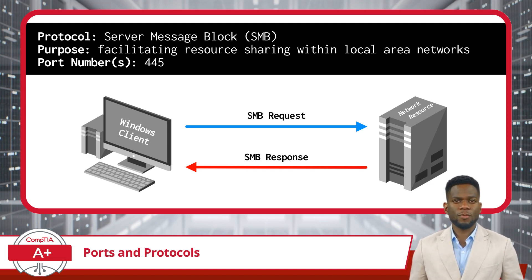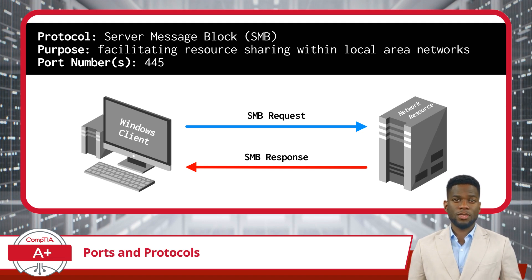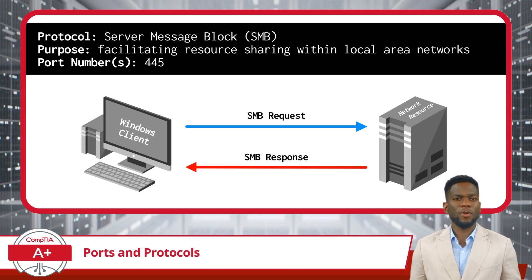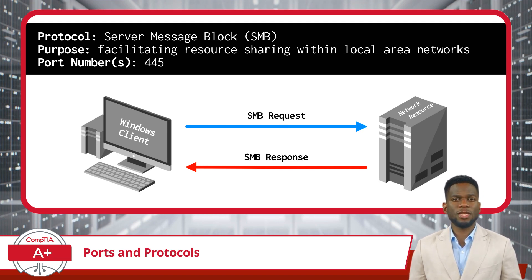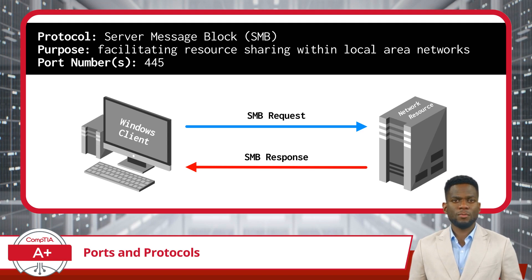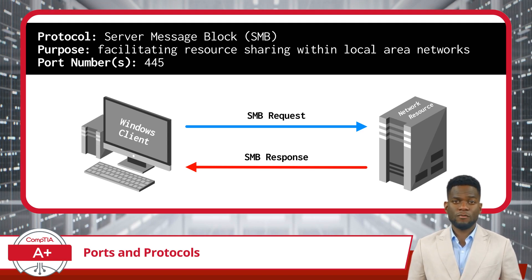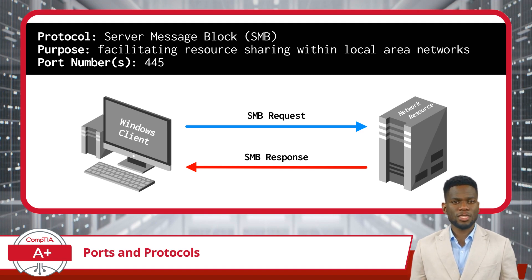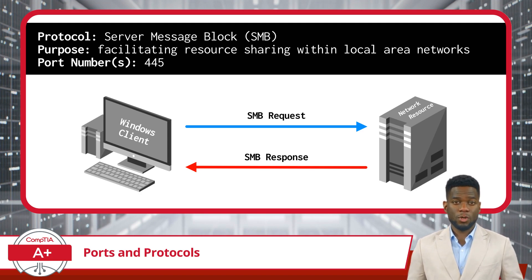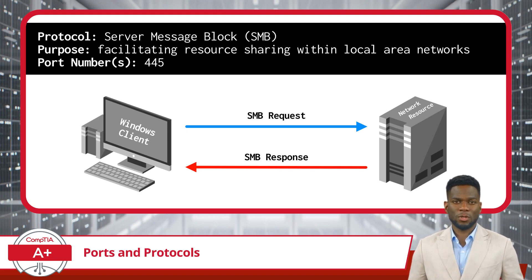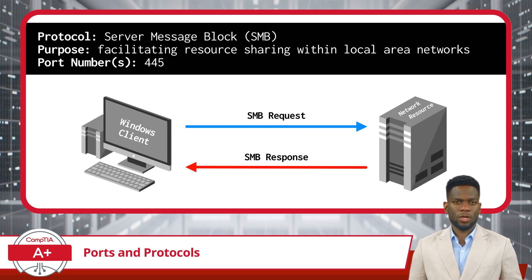Next is SMB, which stands for Server Message Block. SMB is a network communication protocol used primarily for providing shared access to files, printers, and serial ports among devices on a network. It's most commonly seen in Windows environments, where it facilitates easy sharing within a local area network. SMB commonly operates on port 445. A key feature is its ability to allow computers to read and write files and request services from servers, and it can also authenticate and authorize access to network resources.